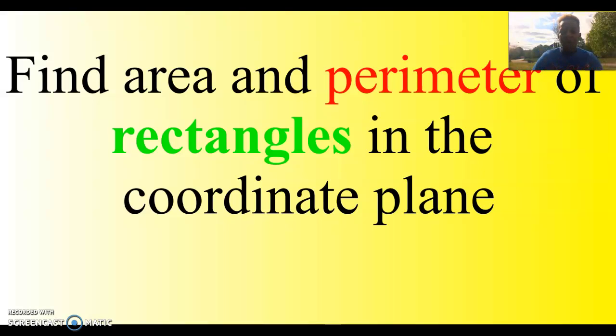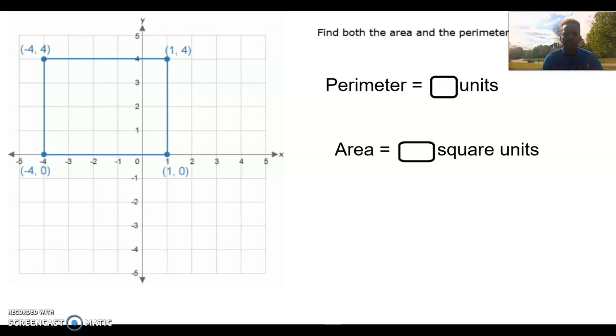So let's go right into it. Finding the area and perimeter of rectangles in the coordinate plane. Here is an example right here. The question is: Find both the area and the perimeter of this rectangle. Just to remind you, perimeter means the outside measurement. What is the outside measurement all the way around this rectangle?